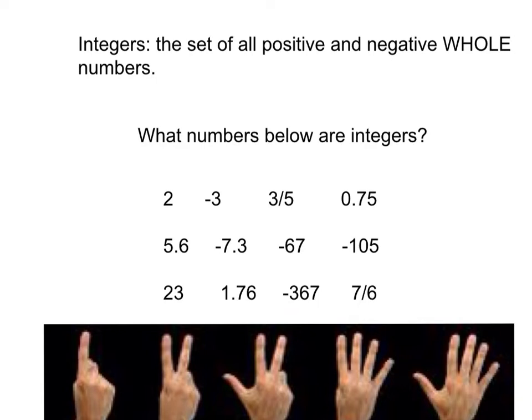I will now go through and put an X through numbers that are not integers and explain why they are not integers. 3 fifths is a fraction. A fraction is not a whole number and all integers are whole numbers. Therefore, 3 fifths cannot be an integer. Since we know fractions can't be integers, that also rules out 7 sixths.